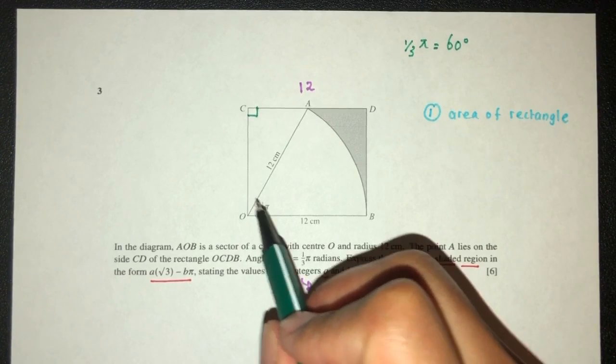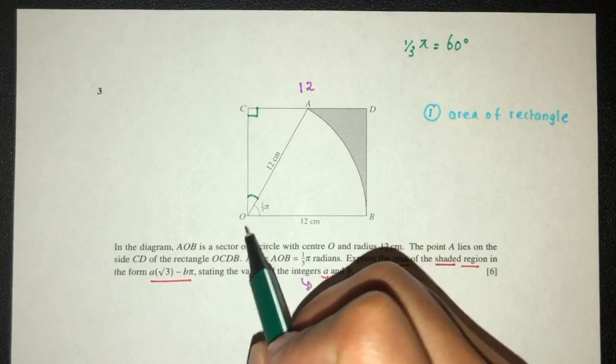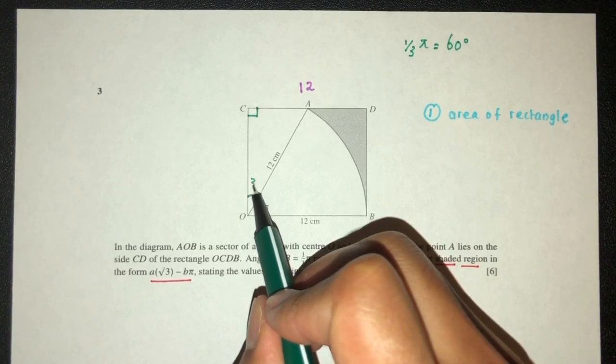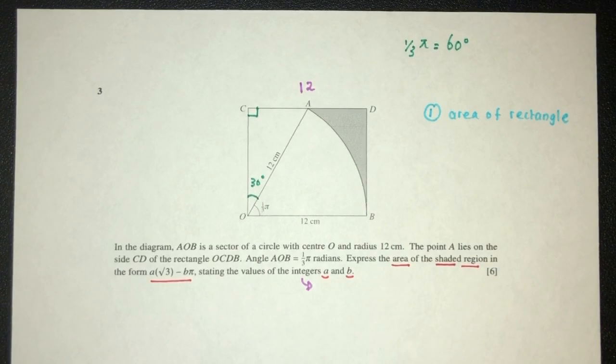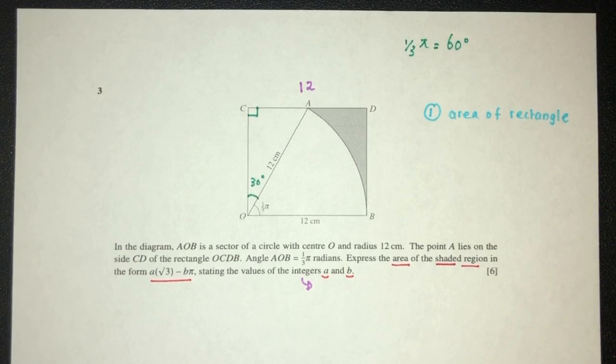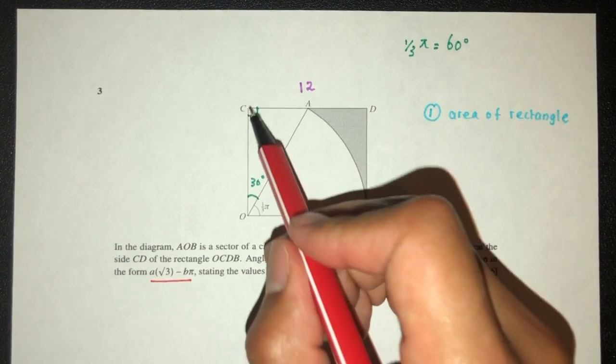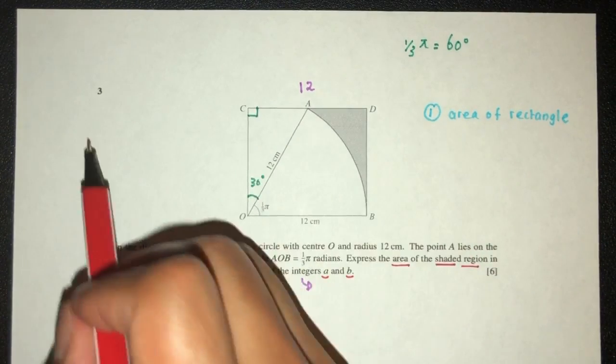Now, if this is 60 degrees, what is the value of this angle? 90 minus 60. That should be 30. Now, obviously, if we can see this here, we have a right angle triangle.